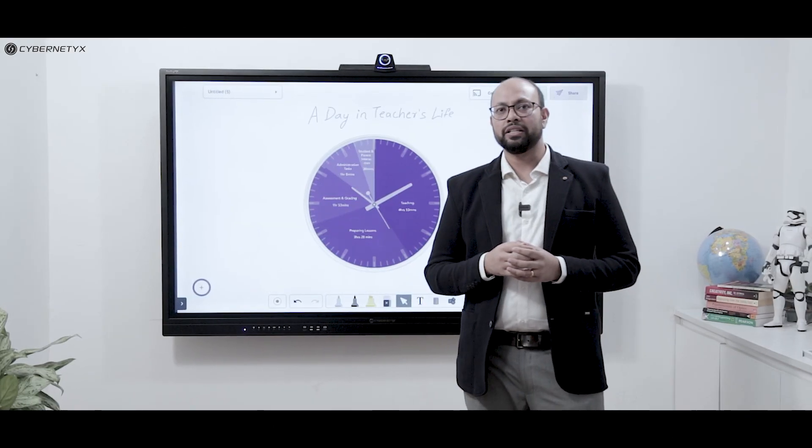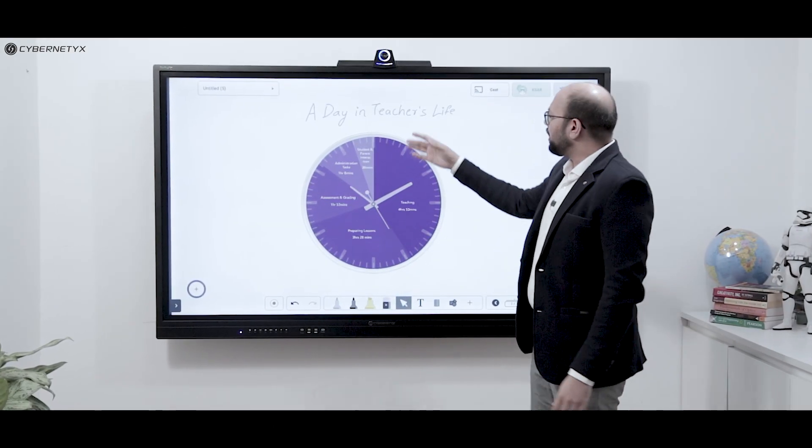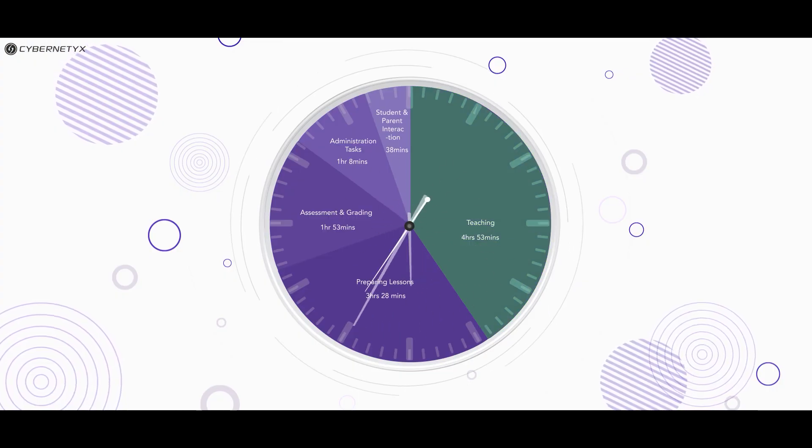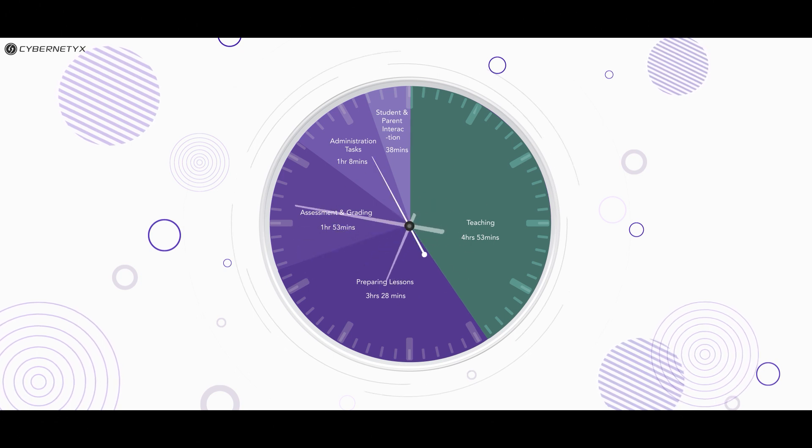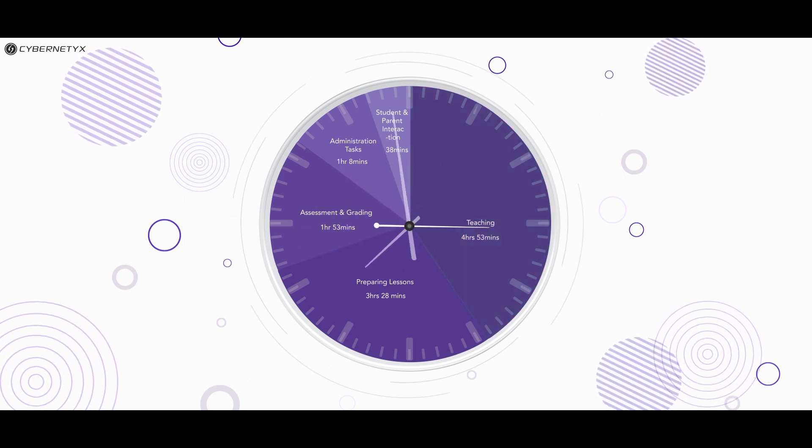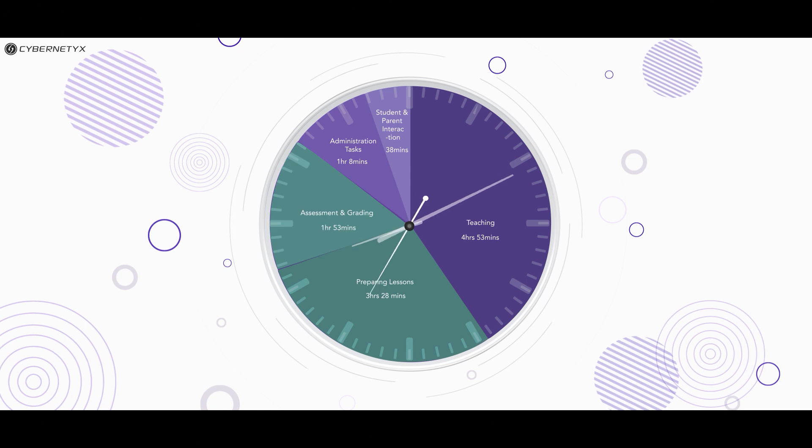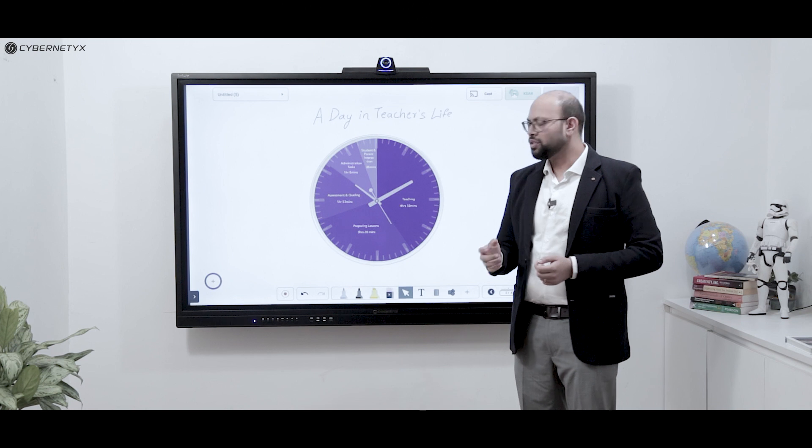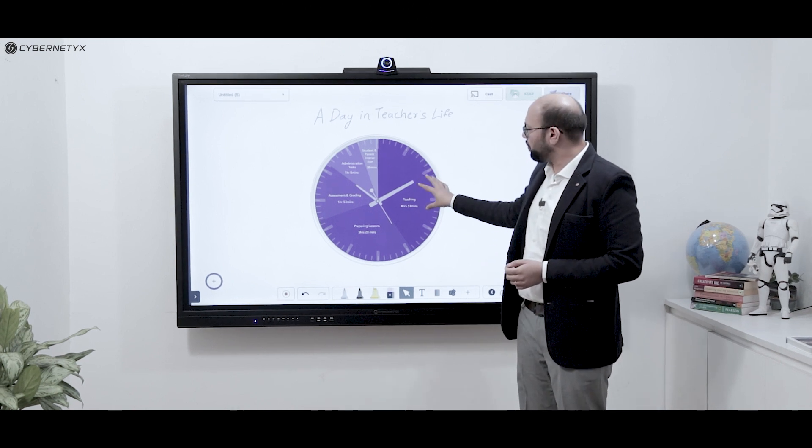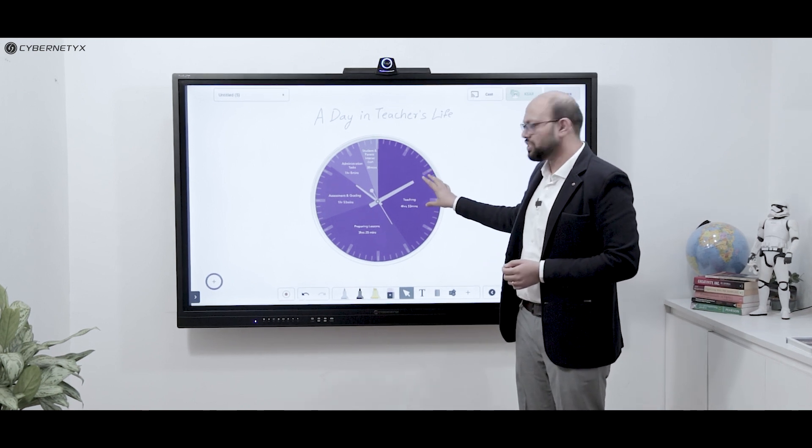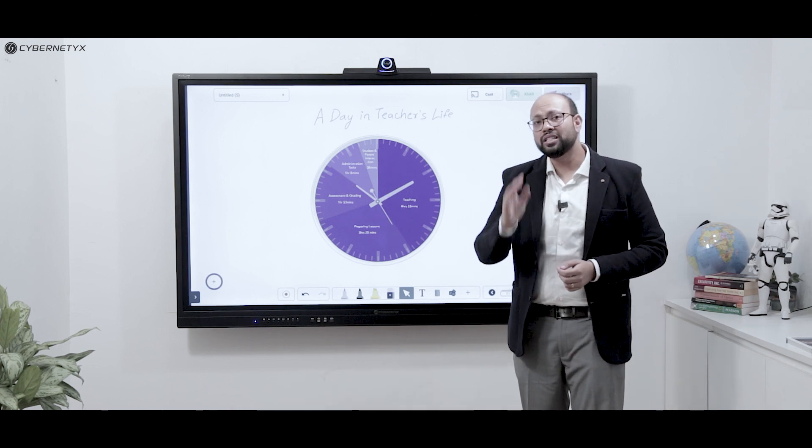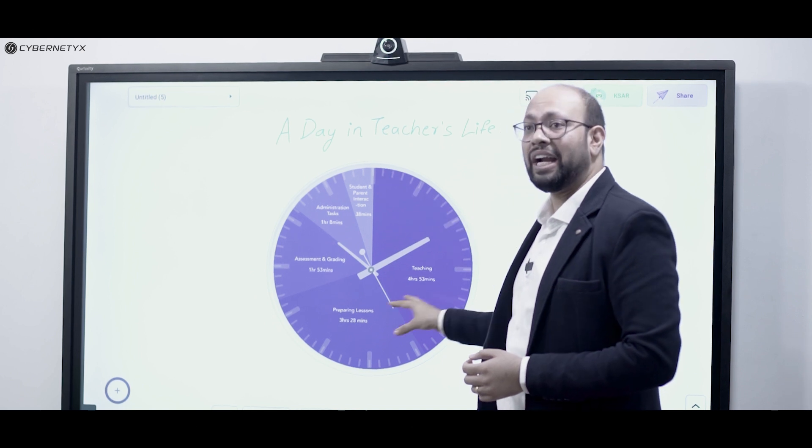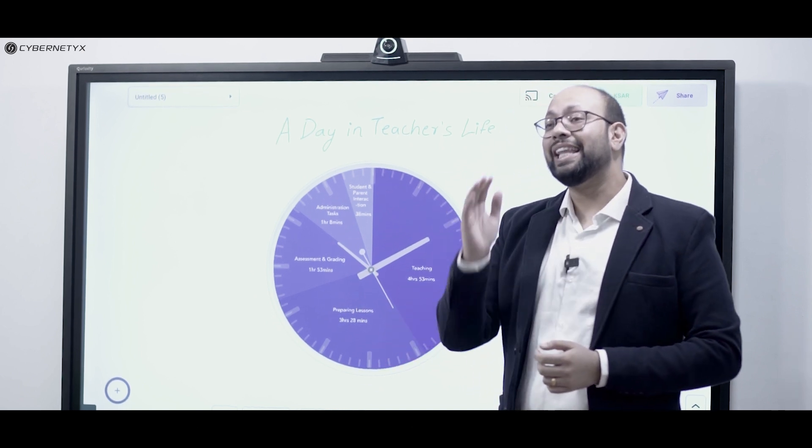Based on research conducted by ResearchGate.net, this is a typical day in a teacher's life. Around 40 to 45 percent of the teacher's time is spent in instruction, whereas the rest 60 percent is spent in other activities like preparing lessons, creating assessments, grading them, etc. Most smart classroom solutions focus on the 40 to 45 percent teaching time, whereas Curiosity is the only solution that assists teachers in performing all day-to-day activities effectively with less time and effort.